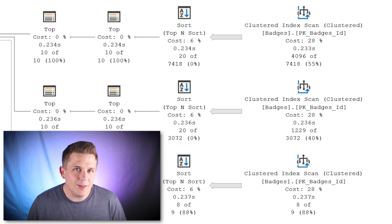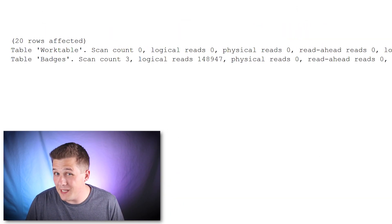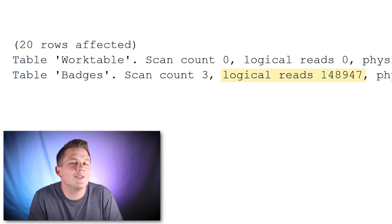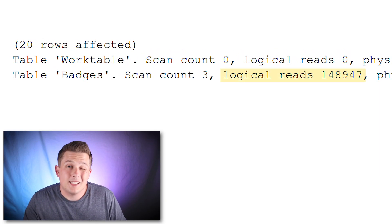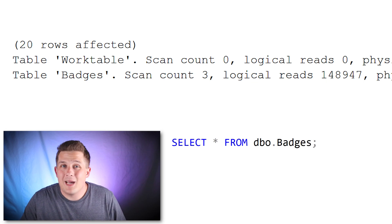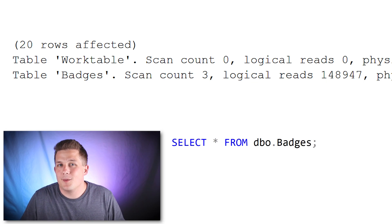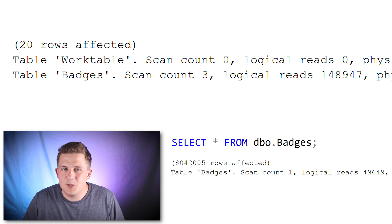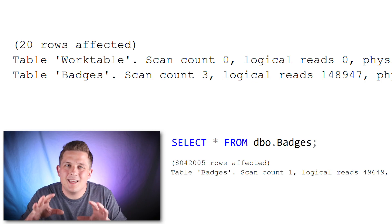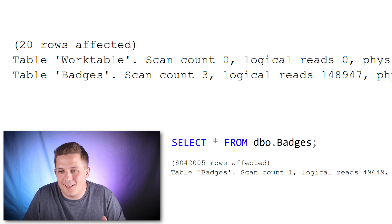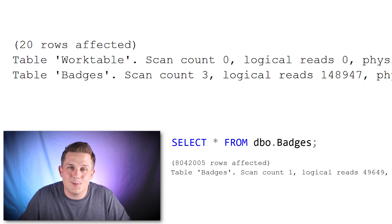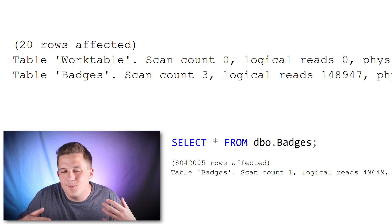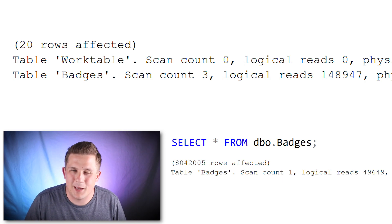If we look at the number of logical reads for this query, we'll see it's about 150,000. If we run a query against the DBO badges table without any filtering, the number of logical reads is about 50,000 — which reconfirms that SQL Server needs to rescan our clustered index three times, reading in all those pages to return the results we asked for. So this seems really inefficient; there's got to be something we can do to improve the performance here.